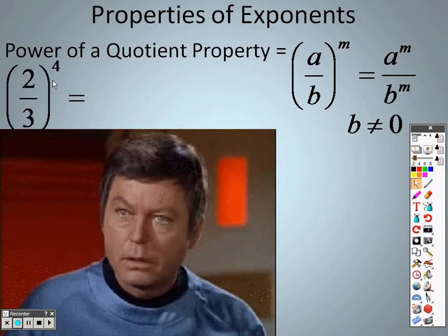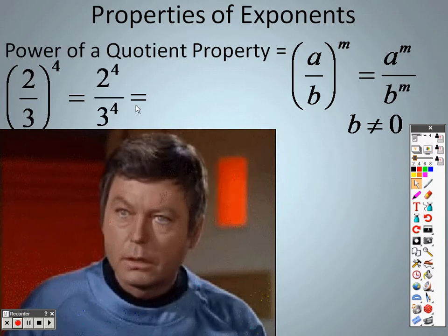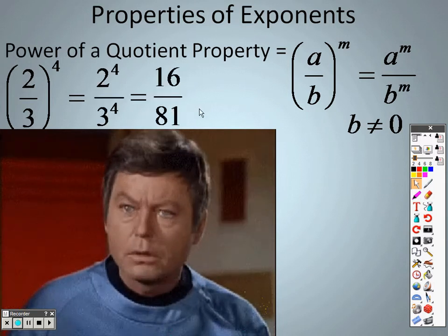So if I had 2 thirds to the 4th, it would be 2 to the 4th, 3 to the 4th, and 2 to the 4th is 16, and 3 to the 4th is 81.